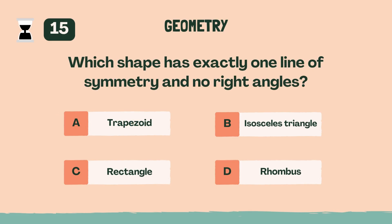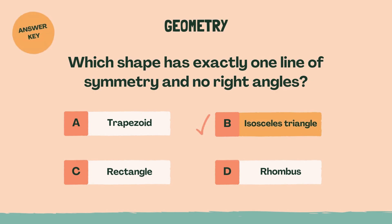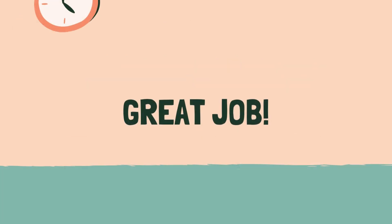Which shape has exactly one line of symmetry and no right angles? B, isosceles triangle. Great job. Ready for some algebra?